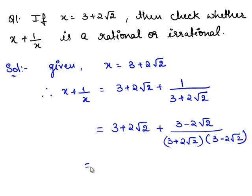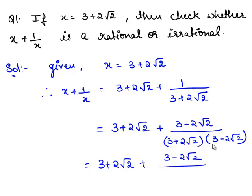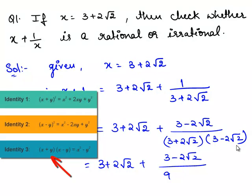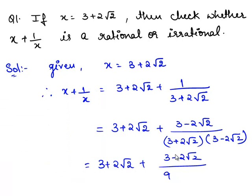Which is equal to 3 plus 2 root 2 plus 3 minus 2 root 2, divided by 9. And 3 times minus 2 root 2 is minus 6 root 2, and 3 times 2 root 2 is plus 6 root 2. So, plus 6 root 2 and minus 6 root 2 get cancelled.